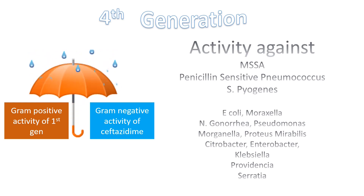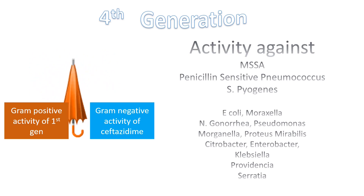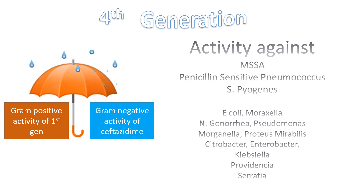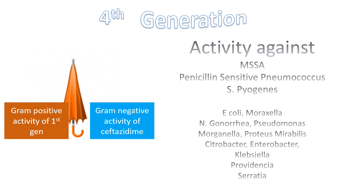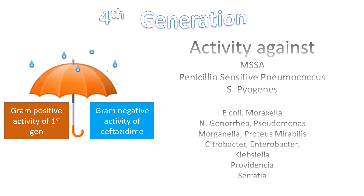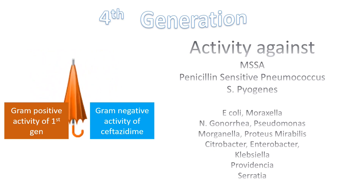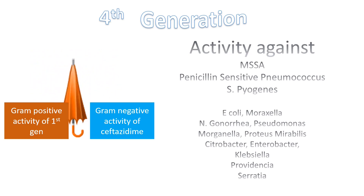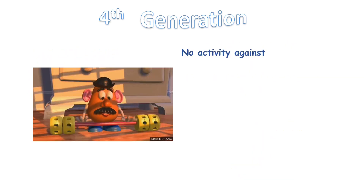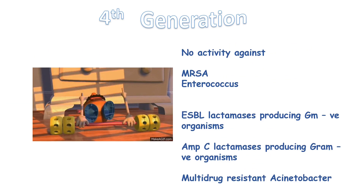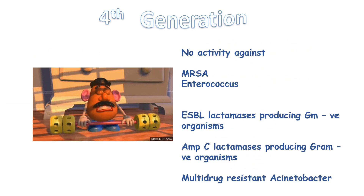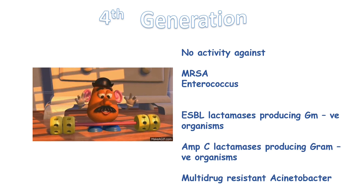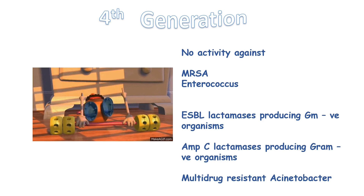They are also effective against H. influenzae, Moraxella catarrhalis, Neisseria gonorrhoeae, Pseudomonas aeruginosa, Morganella, Proteus mirabilis, Citrobacter, Enterobacter, Klebsiella, Providencia, and Serratia species. Fourth generation cephalosporins have no activity against MRSA, Enterococcus, extended-spectrum beta-lactamase or AmpC beta-lactamase-producing gram-negative organisms, or multidrug-resistant Acinetobacter species.